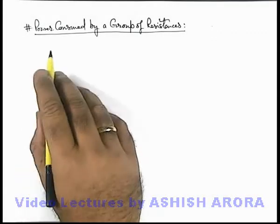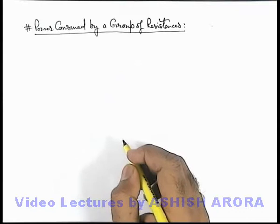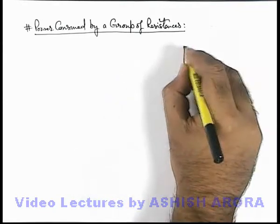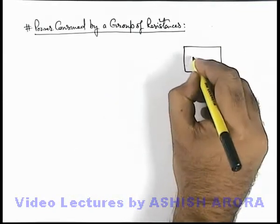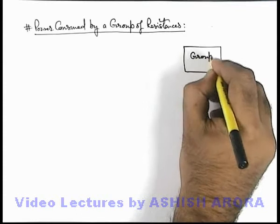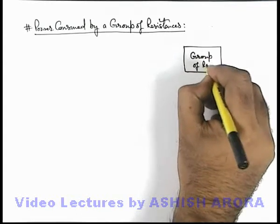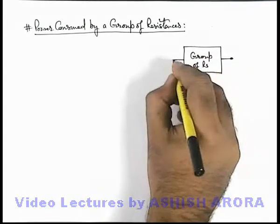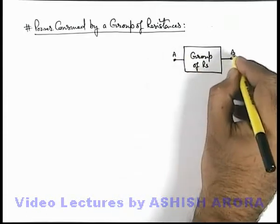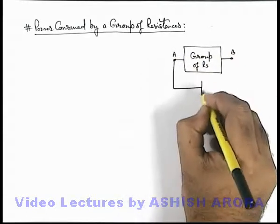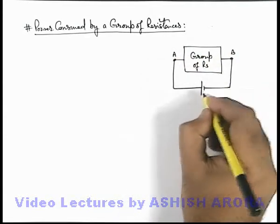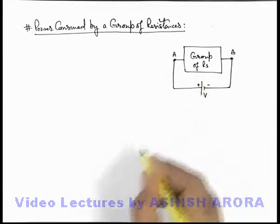Let us discuss power consumed by a group of resistances. Say we are given a circuit in which we have a group of several resistances, and across terminals A and B it is connected across a battery of EMF V.